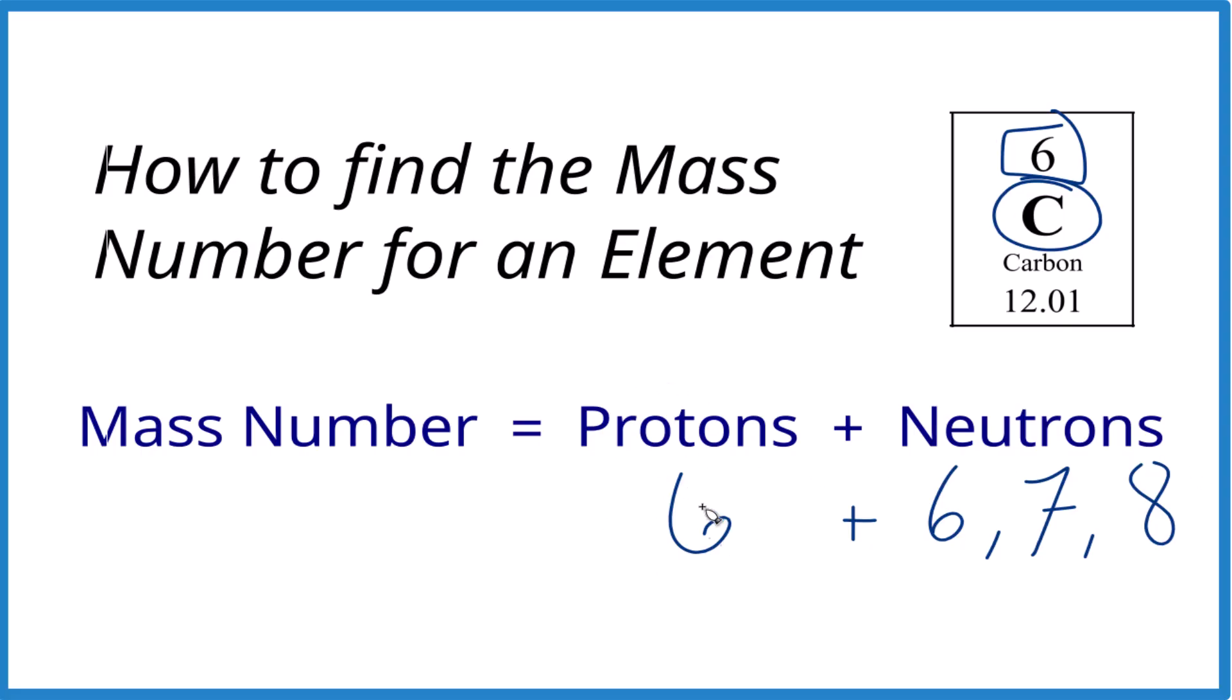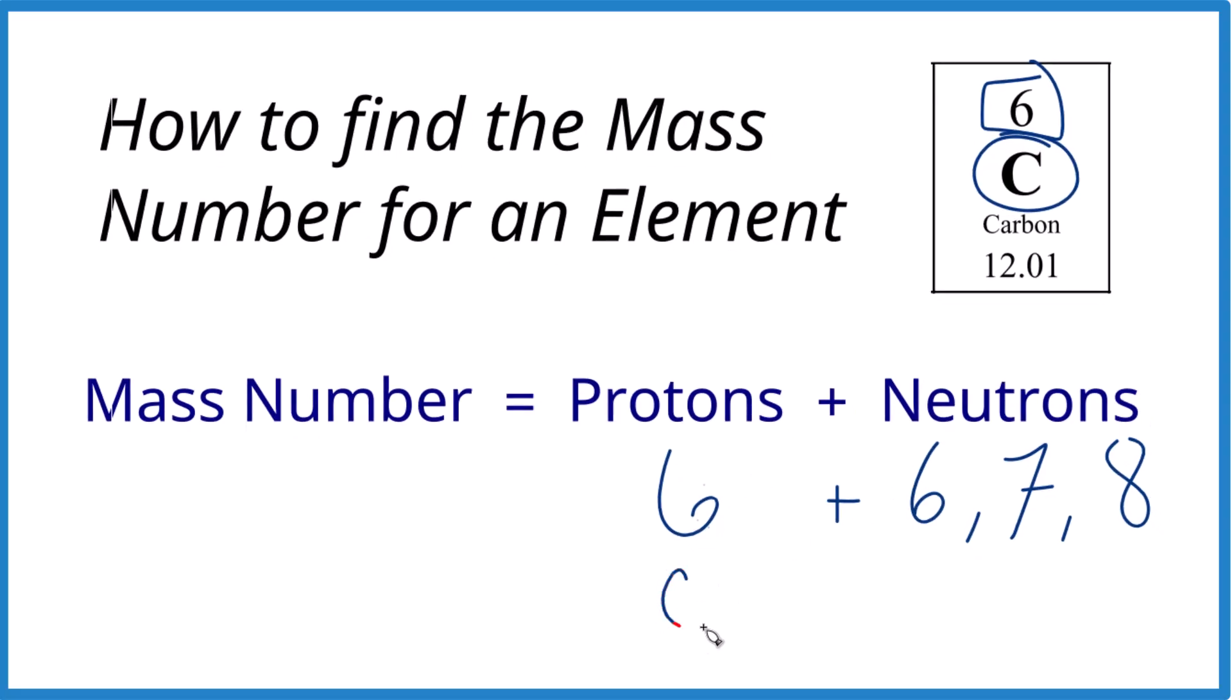So we said carbon always has 6 protons, but it can have 6, 7, or 8 neutrons. Those are called isotopes. So if you have 6 neutrons and it's carbon, you have 6 protons, that's carbon-12.